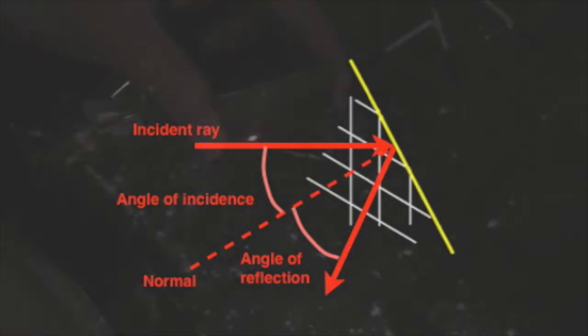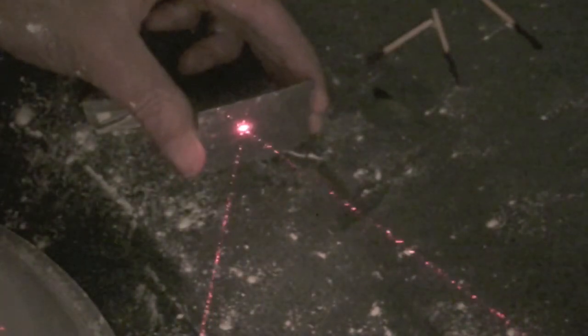Perhaps the most obvious example and one of the most important examples of the reflection of waves is the reflection of light at a mirror.